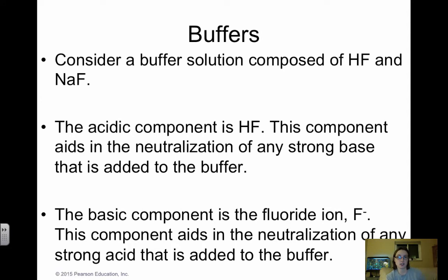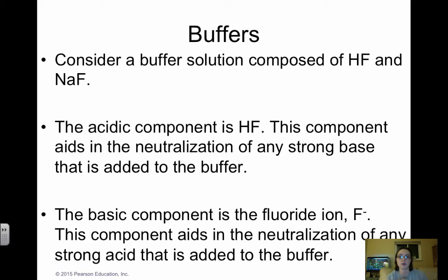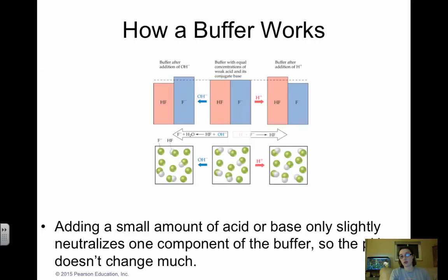Let's consider a buffer composed of HF (hydrofluoric acid) — a weak acid, not one of the seven strong acids — and sodium fluoride, NaF. The F⁻ is the conjugate base. The acidic component is HF: if you add a base, HF will neutralize it, using up some of the HF in the buffer. The basic component is F⁻ — it's a weak base — so if you add any acid, F⁻ will neutralize that acid, using up some of the F⁻ component.